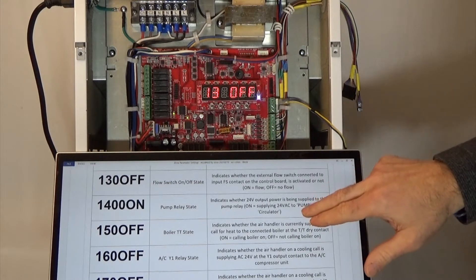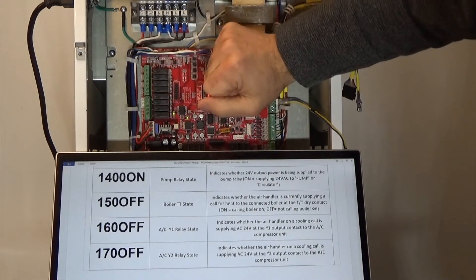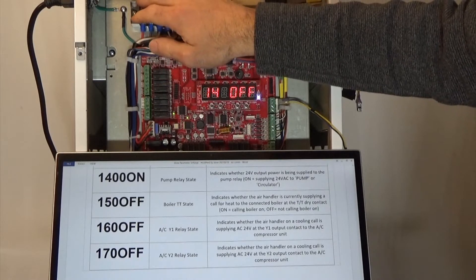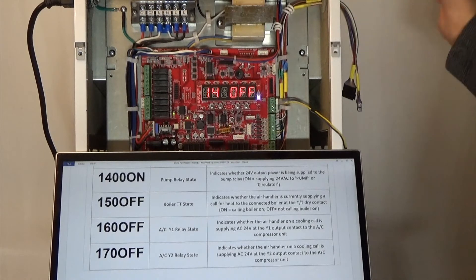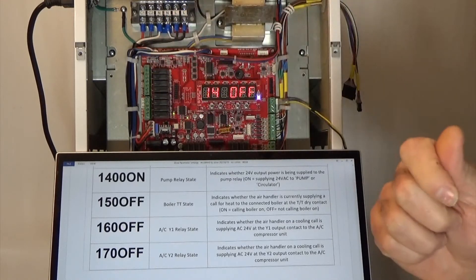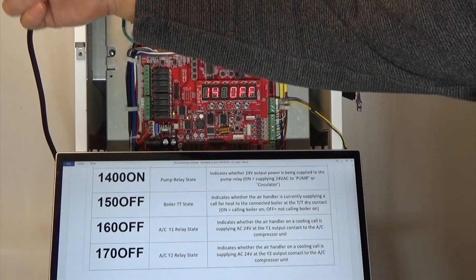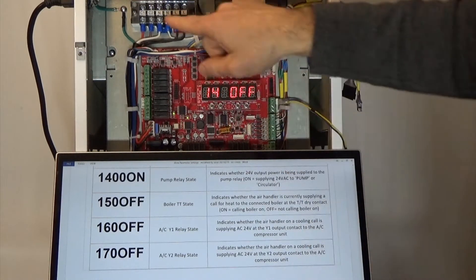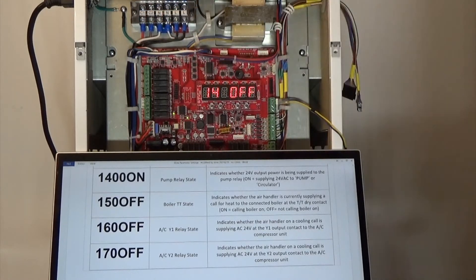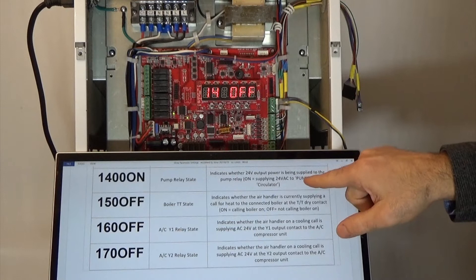Parameter 14 gives us the pump relay state. We have a 24-volt pump connection on the unit — this is different from the main variable speed pump controller. The variable speed control is controlling the pump supplying water to the iFlow. This 24-volt output, marked circulator, would be used if you need to bring on a primary loop pump — you would need a relay to 120V to bring on the primary loop pump, while we directly control the secondary loop variable speed pump from the C1 and N connection on the unit. Parameter 14 tells us whether we're supplying 24 volts to that circulator contact.